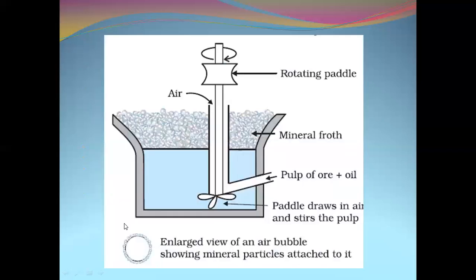We can separate lead sulfide from zinc sulfide by using depressants. Sodium cyanide is used as the depressant to separate zinc sulfide from lead sulfide. This is the schematic representation of a tank which contains a rotating paddle. The ore is mixed with pine oil and water, and the rotating paddle is rotated. The ores which combine with the pine oil are converted into froth. Since it is lighter in weight, it collects on the surface, is skimmed off, dried, and heated to separate the ore. The gangue gets wetted by water and collects at the bottom.